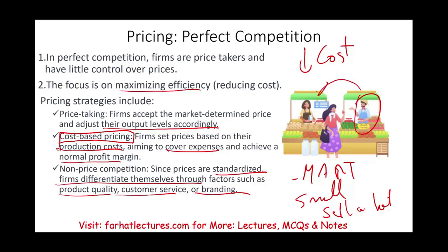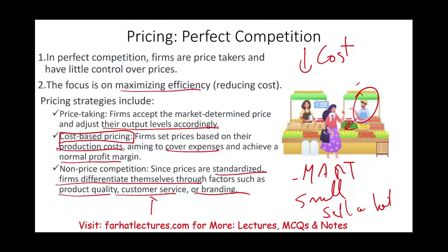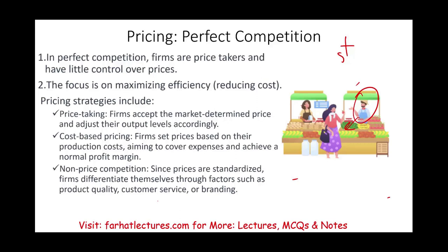How can this individual differentiate themselves from the other seller? For example, the lady could say, 'You buy it, go ahead, finish your shopping, and I will deliver the product to your home' — basically providing extra customer service. Or this gentleman can present their product as a better product, somehow convincing the customer that what he's selling is better corn than the other store. Marketing and branding plays a big role here; otherwise, you have no extra competitive advantage in a perfect competition.